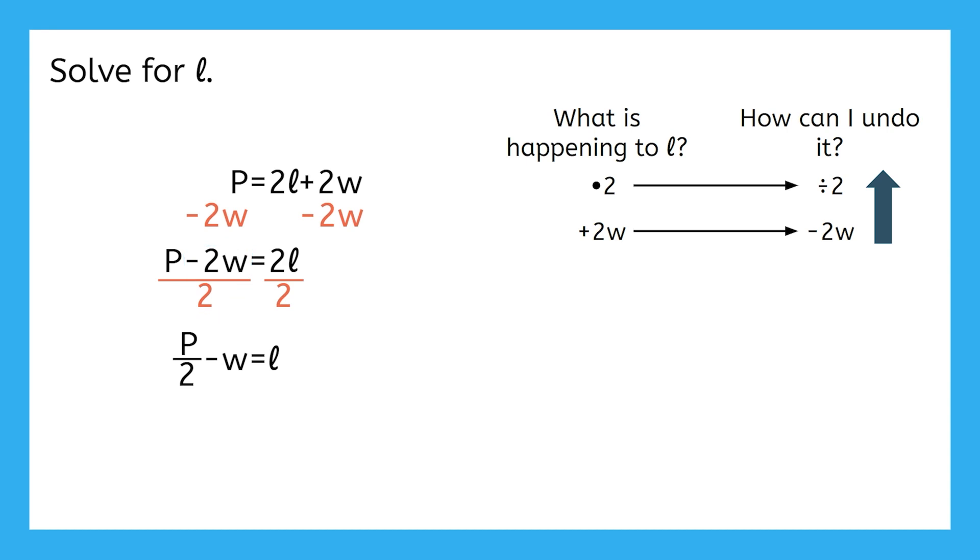So our final, fully simplified answer is that P over 2 minus W equals L. Since distributing the division actually lets us simplify the coefficient of W, our equation wasn't fully simplified until we did it.